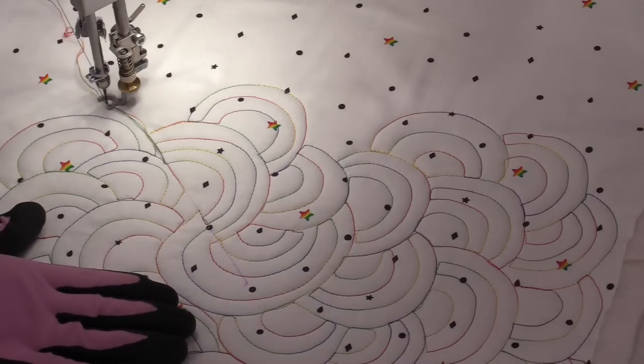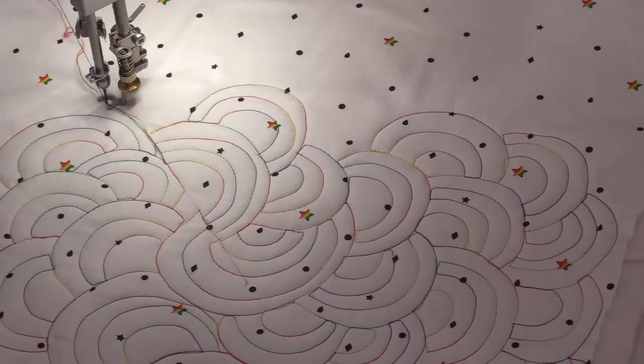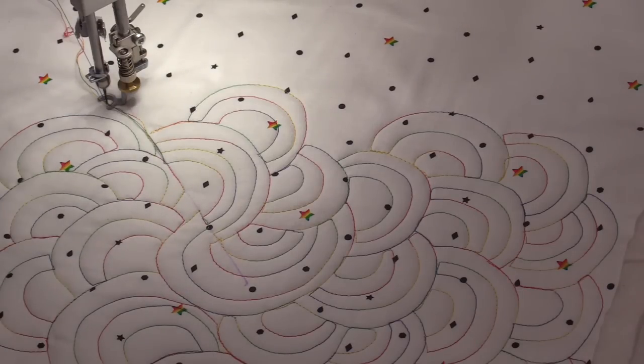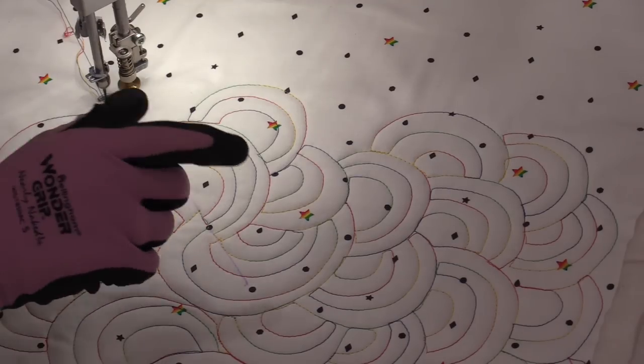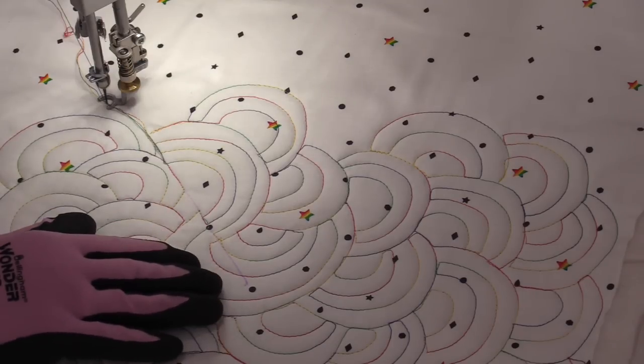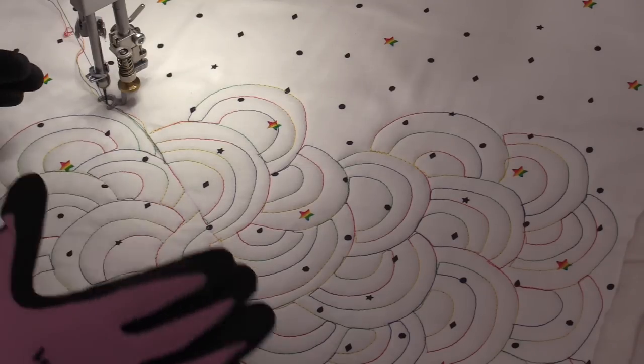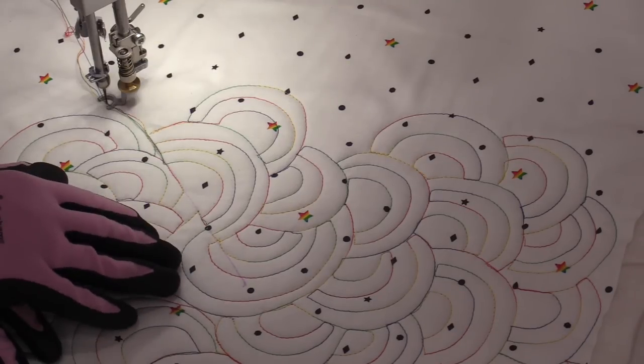You can see how fun this pattern is, even though a lot of the traveling didn't match. They're not all the same size, but it's just a fun, good all-over pattern. Now you can make tiny, tiny little rainbows and do it like a micro-quilting, or you can do really big rainbows if you want to cover a big space. This is definitely a fun pattern to do.